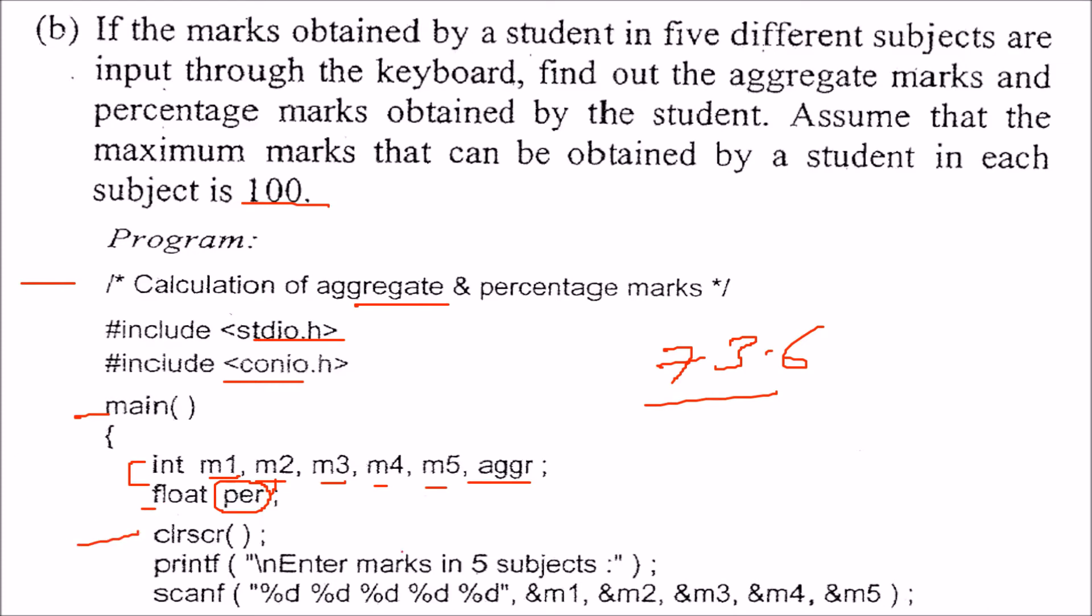Now clear the screen and ask user to enter marks in 5 subjects. 5 values will be entered by the user, so we have 5 %d's because this is %d we have taken for integer. So we have &m1, &m2 till &m5.